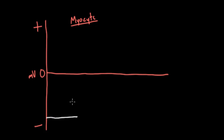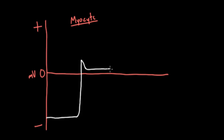At some point the cell is going to get some positive charge from a neighboring cell — it's going to have an action potential. It's going to go really positive, then peter down a little bit as potassium channels let out potassium. Then it goes through an interesting plateau where calcium is rushing in and potassium is rushing out. Finally it goes back down as potassium wins, driving it back to around negative 90 millivolts.